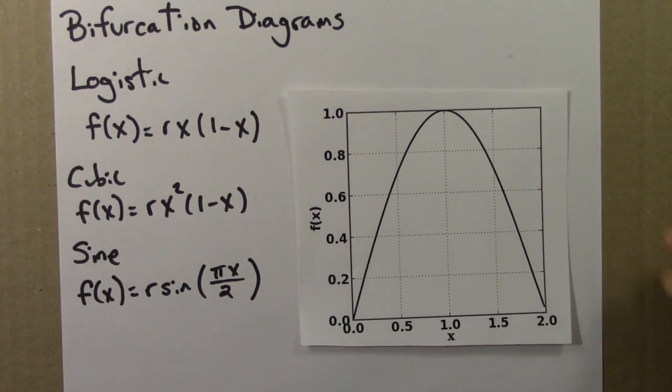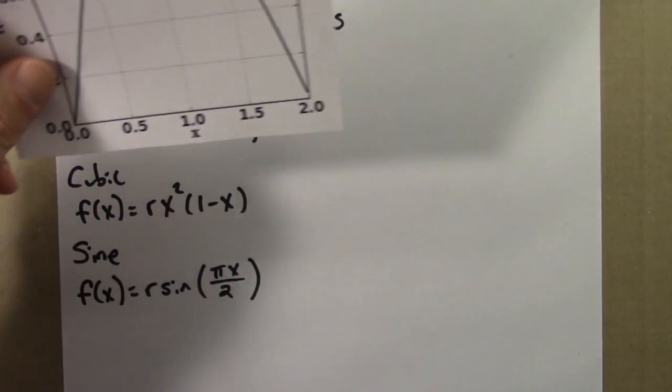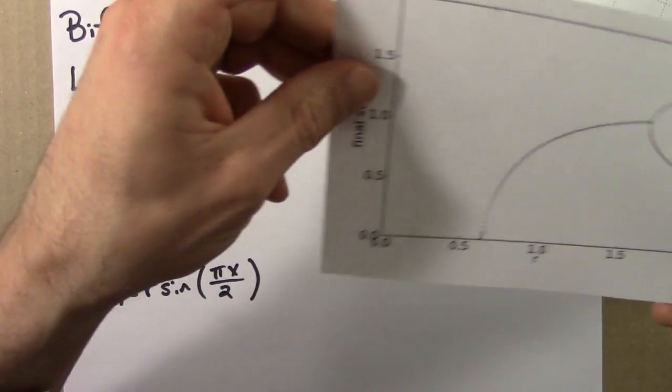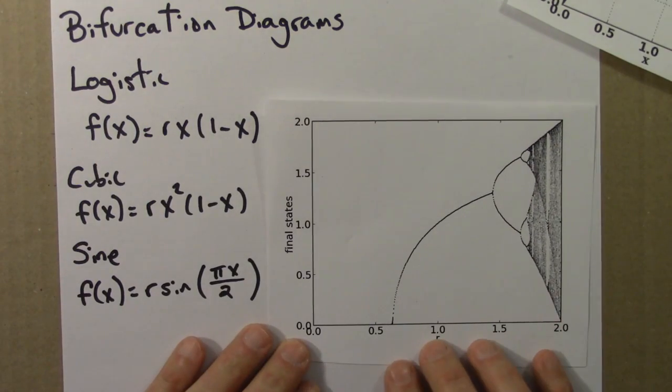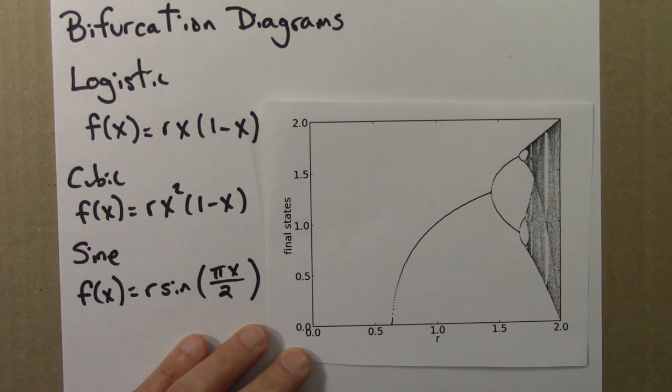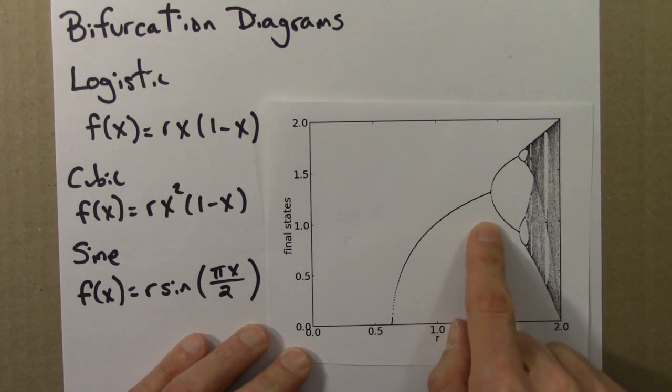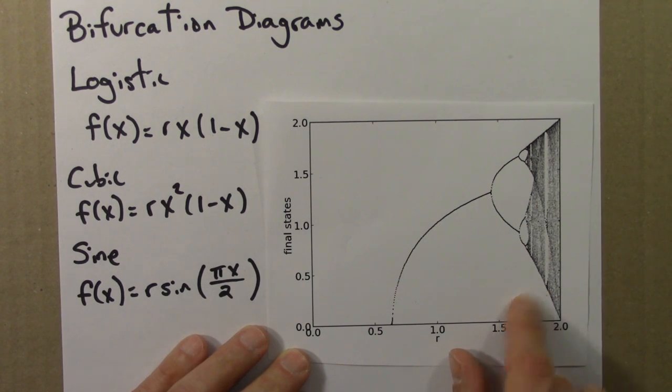And we can make a bifurcation diagram for this. And if I do that, I get this. Again, this looks pretty familiar. This is a lot like the logistic equation. Period 1 to 2, 2 to 4. There are regions of aperiodicity interrupted by periodic windows.